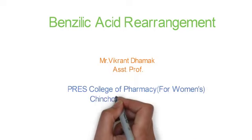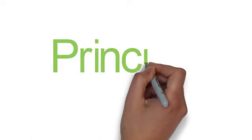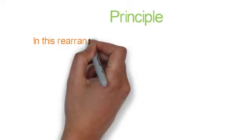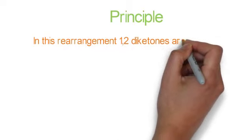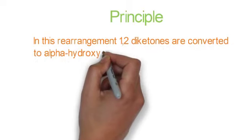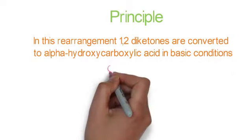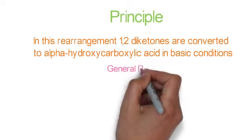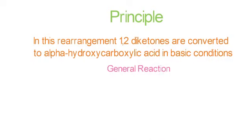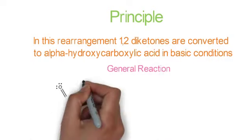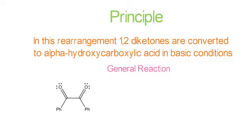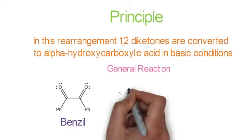Let's see firstly the principle of this rearrangement. In this rearrangement, 1,2-diketones are converted to alpha-hydroxy carboxylic acid in basic conditions. We'll see the general reaction now. This is the structure of benzil, that is 1,2-diketones having dual ketonic groups.